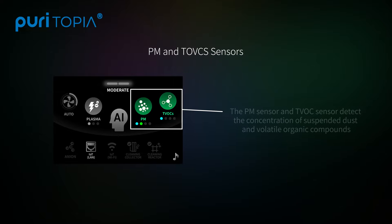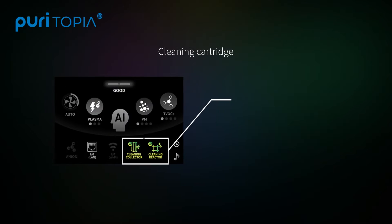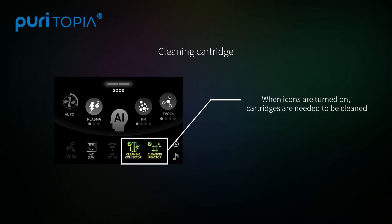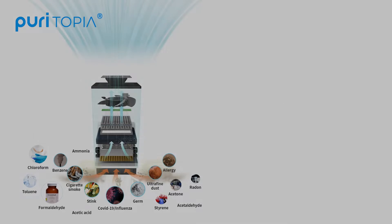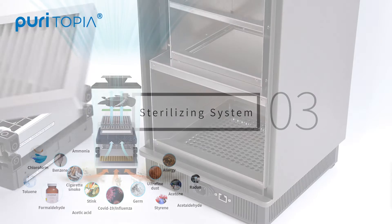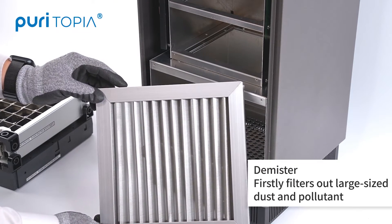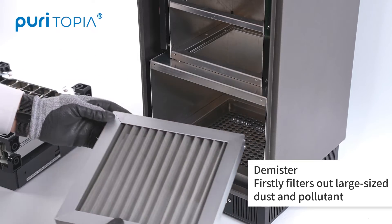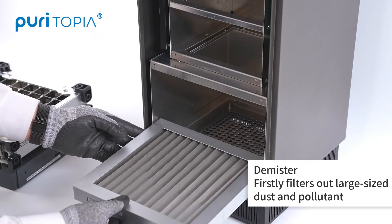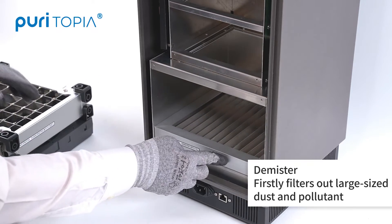Dust and TVOC Sensors, Cleaning Cartridge, and Demister: the demister filters out large-sized dust and pollutants in the air and prevents air vortex.